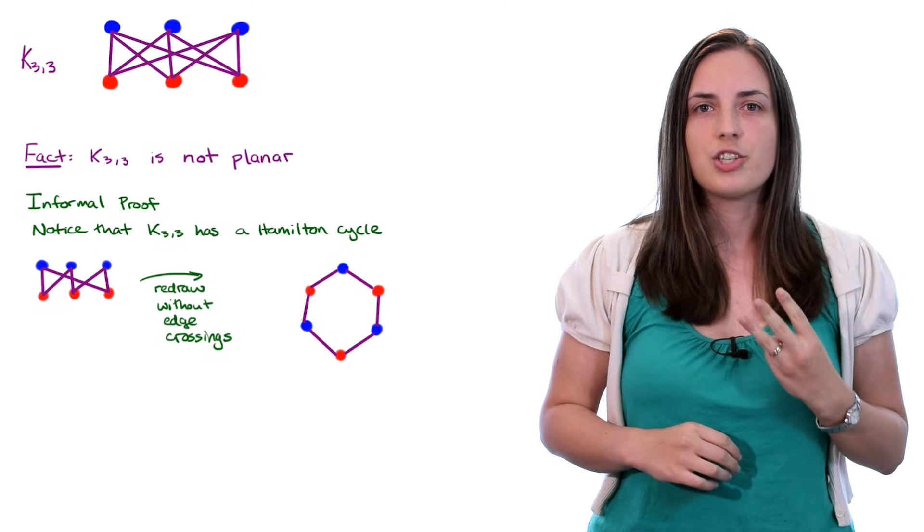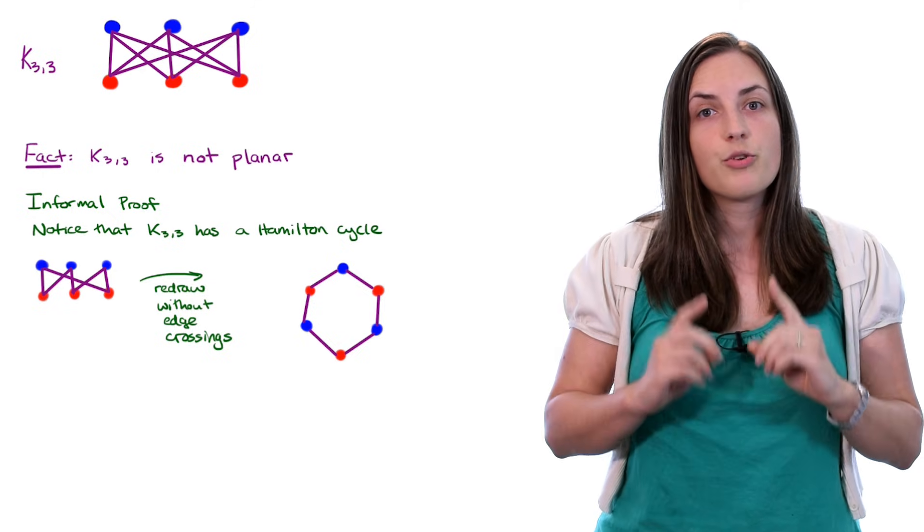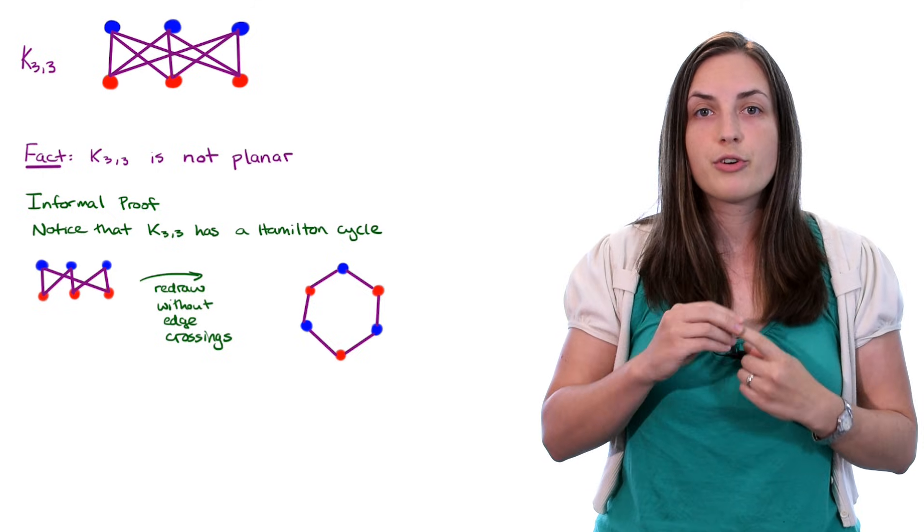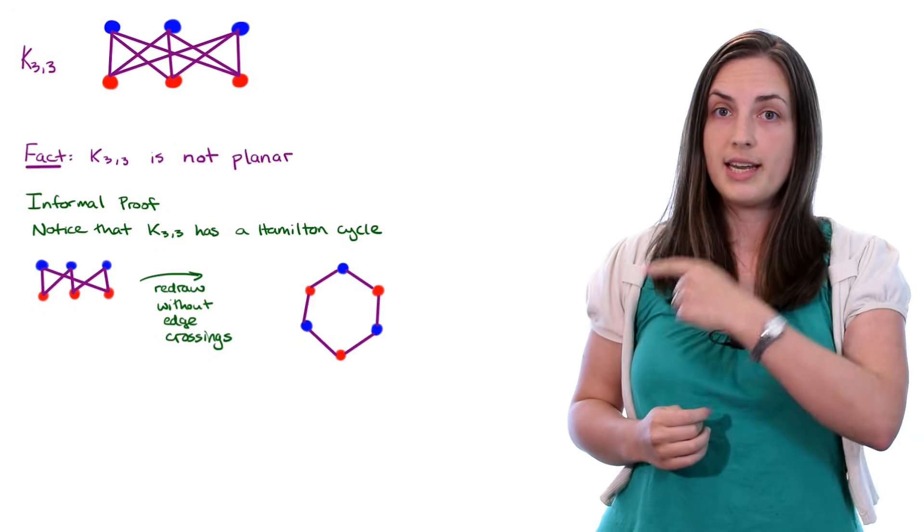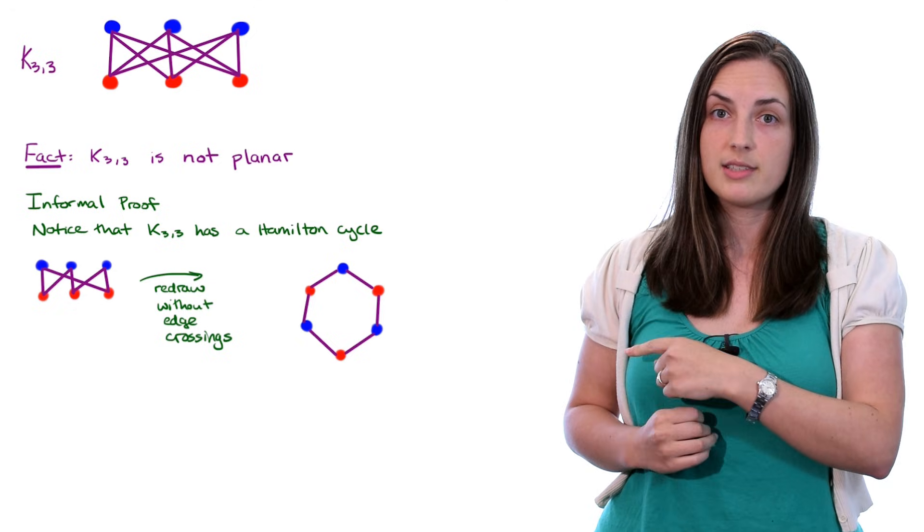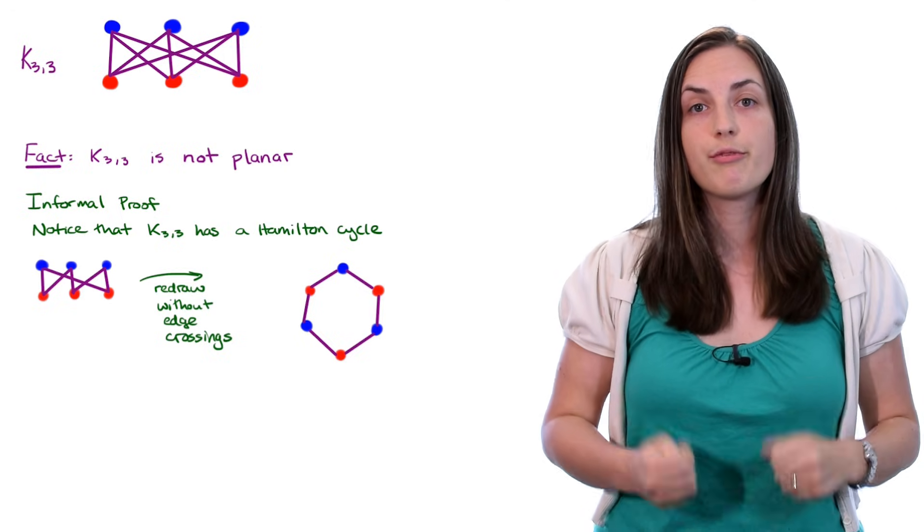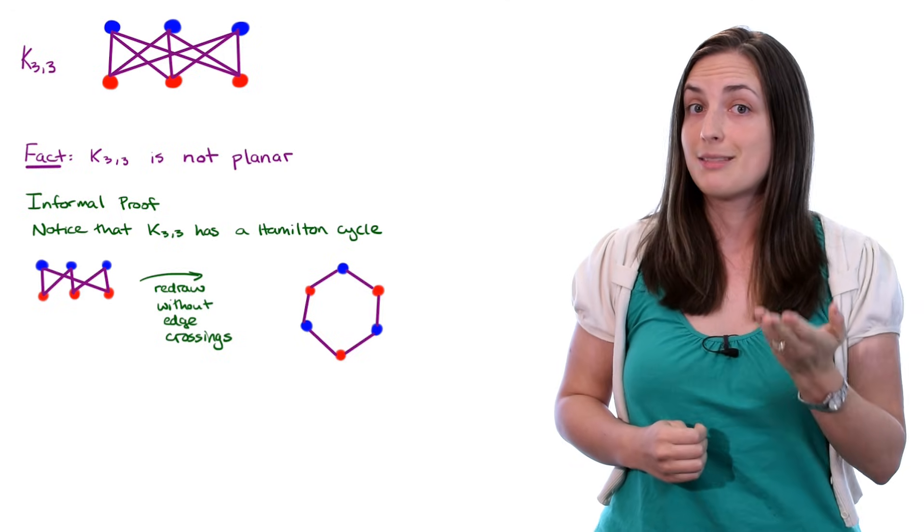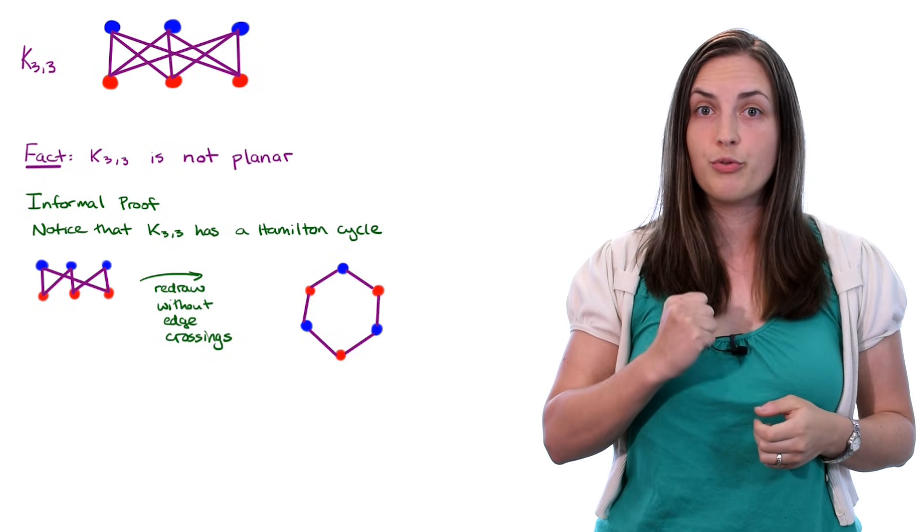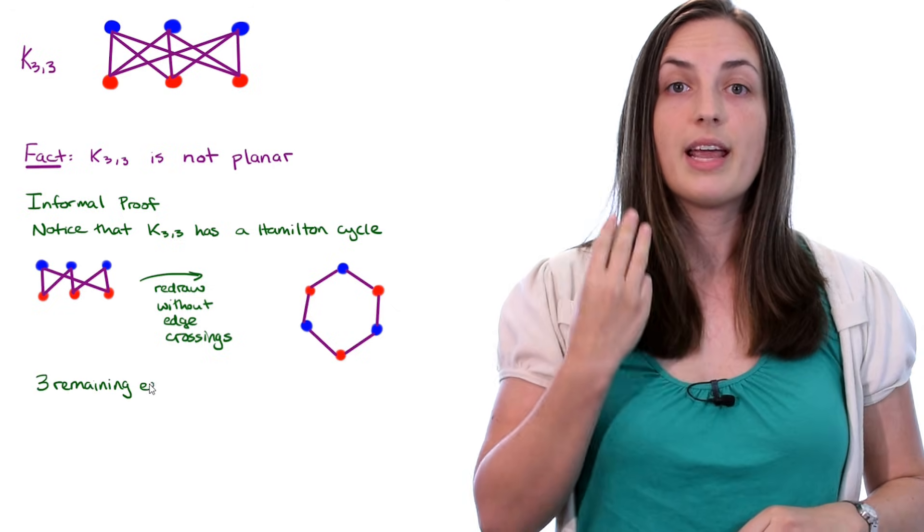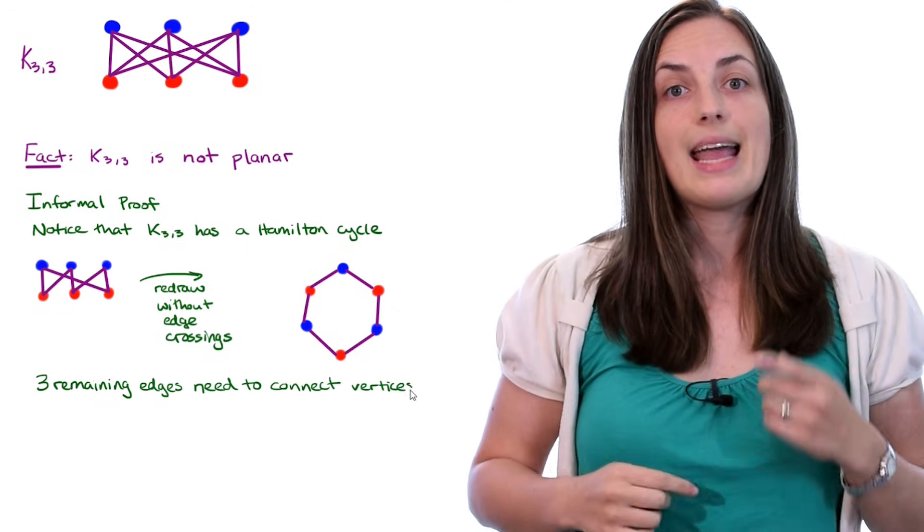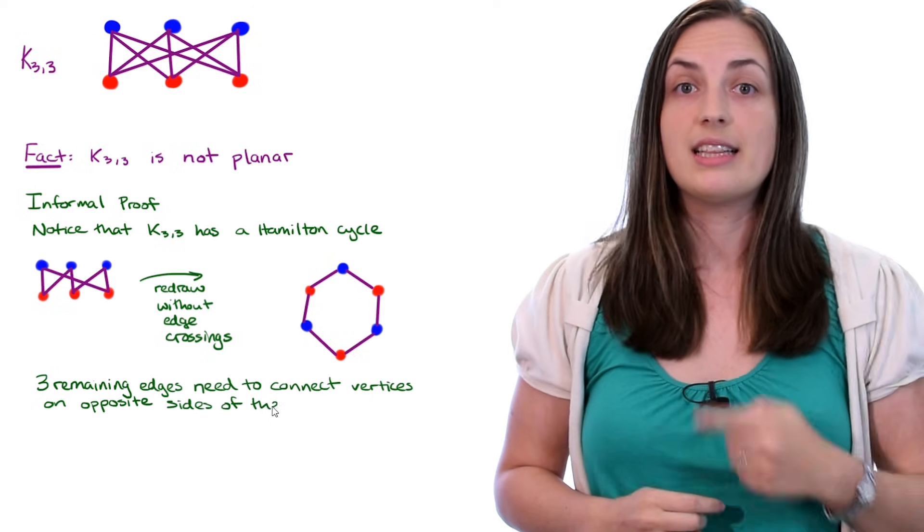Okay, but we're kind of missing three edges. Because in the original graph, every blue vertex is connected to every red vertex. That means if you take a look at a blue vertex in the Hamilton cycle, it needs to have an edge to go to every red vertex. And right now it's missing one of those. Each blue vertex is missing an edge to a red vertex. That means that we have three more edges to go in and they are the diagonal edges in this Hamilton cycle.